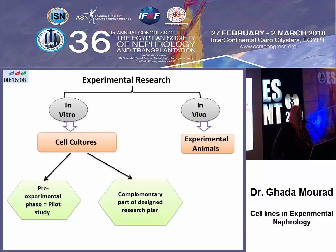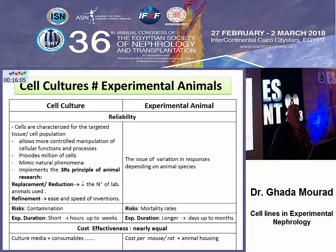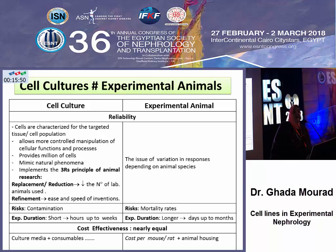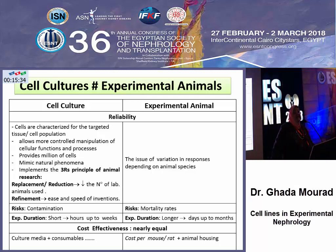If we compare the privileges of each of these approaches, we can see that cell cultures provide a model giving the researcher a large number of cells and implementing the 3R requirements for experimental research, which is the replacement and reduction of using experimental animals, as well as providing results that would lead to refinement of research results and innovation.